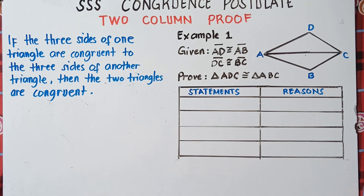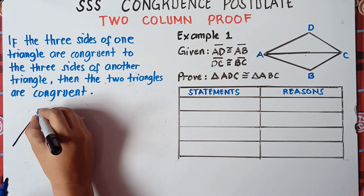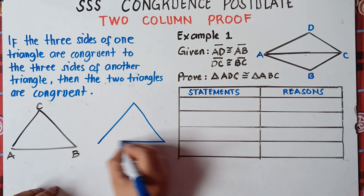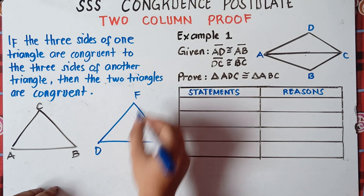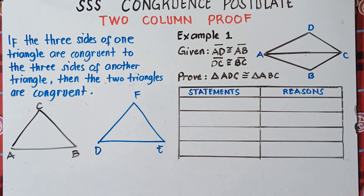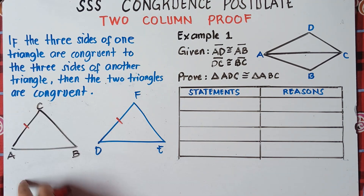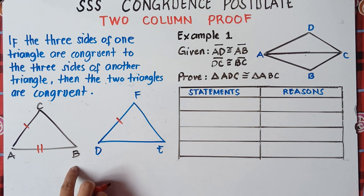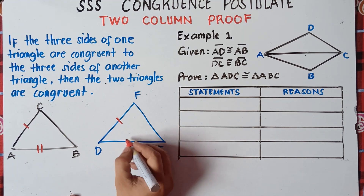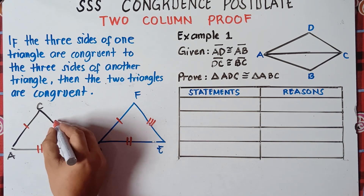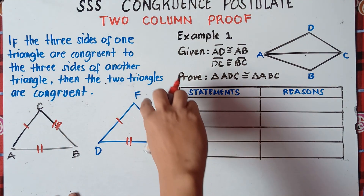Let me explain that. If we have a first triangle ABC and we draw another triangle DEF, we need to prove that these two triangles are congruent. So if AC is congruent to DF, AB is congruent to DE, and BC is congruent to EF — that is the SSS, or side-side-side postulate.